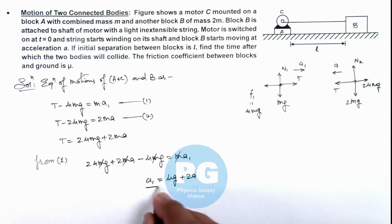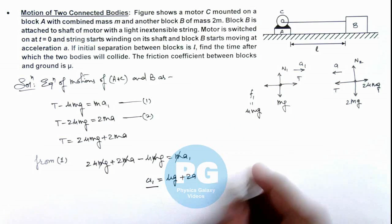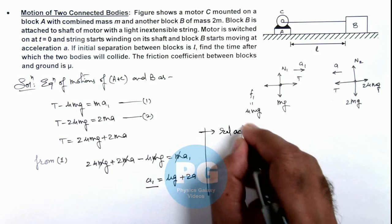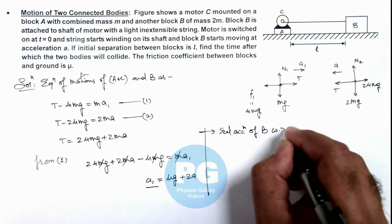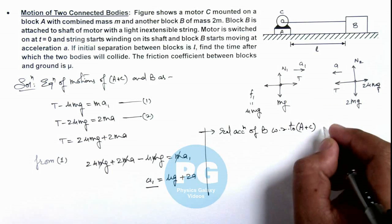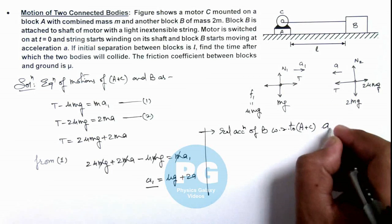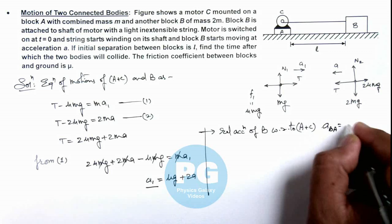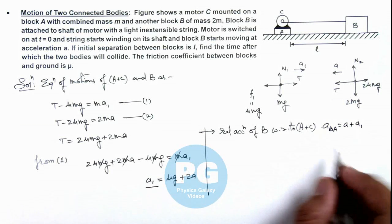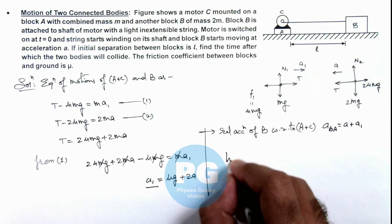If we have got the acceleration of block A we can calculate now the relative acceleration of B with respect to A plus C system. And this relative acceleration of B with respect to A we can write as a plus a1, and if we got the relative acceleration we can directly write time.